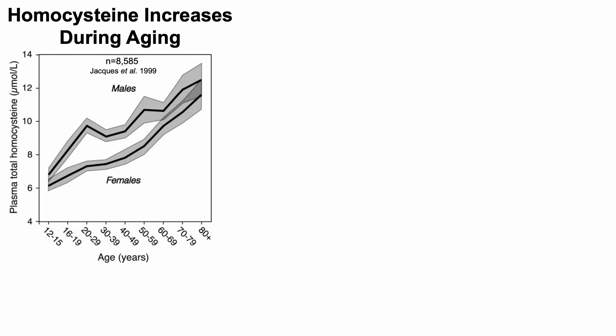Homocysteine increases during aging. Here we've got plasma levels of homocysteine plotted on the y-axis against age on the x-axis. The age range goes from 12-year-olds all the way up to older than 80-year-olds. And here we can see the age-related increase for homocysteine, first for men and then also for women.